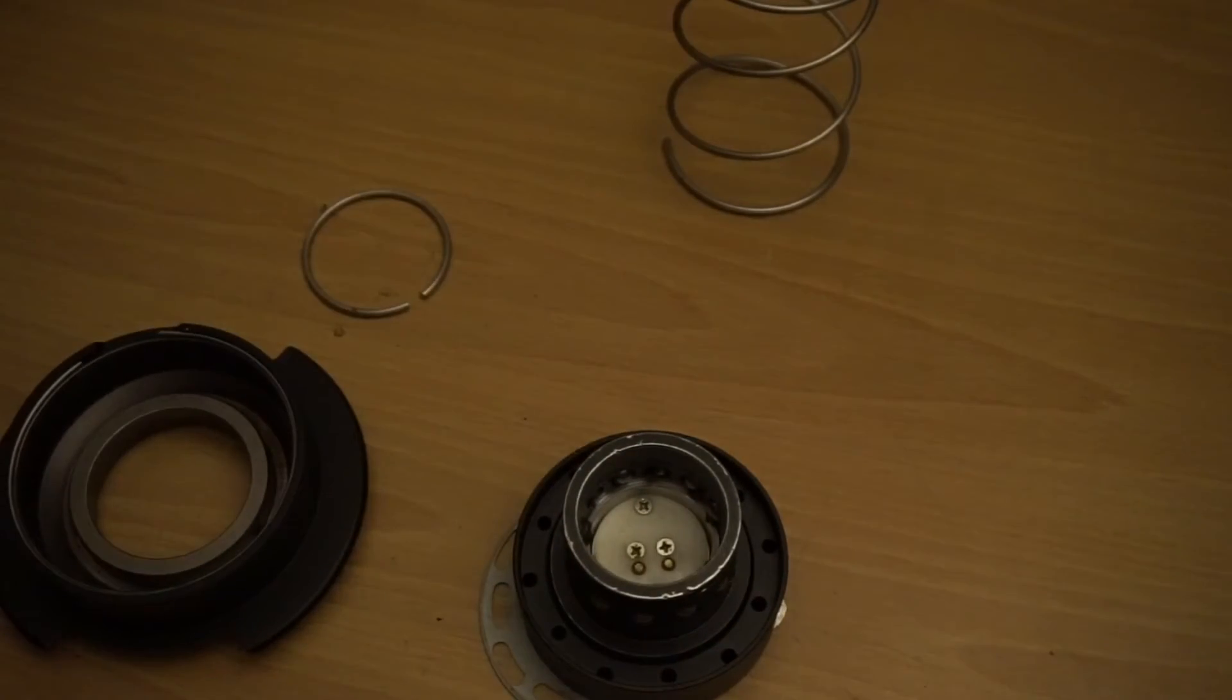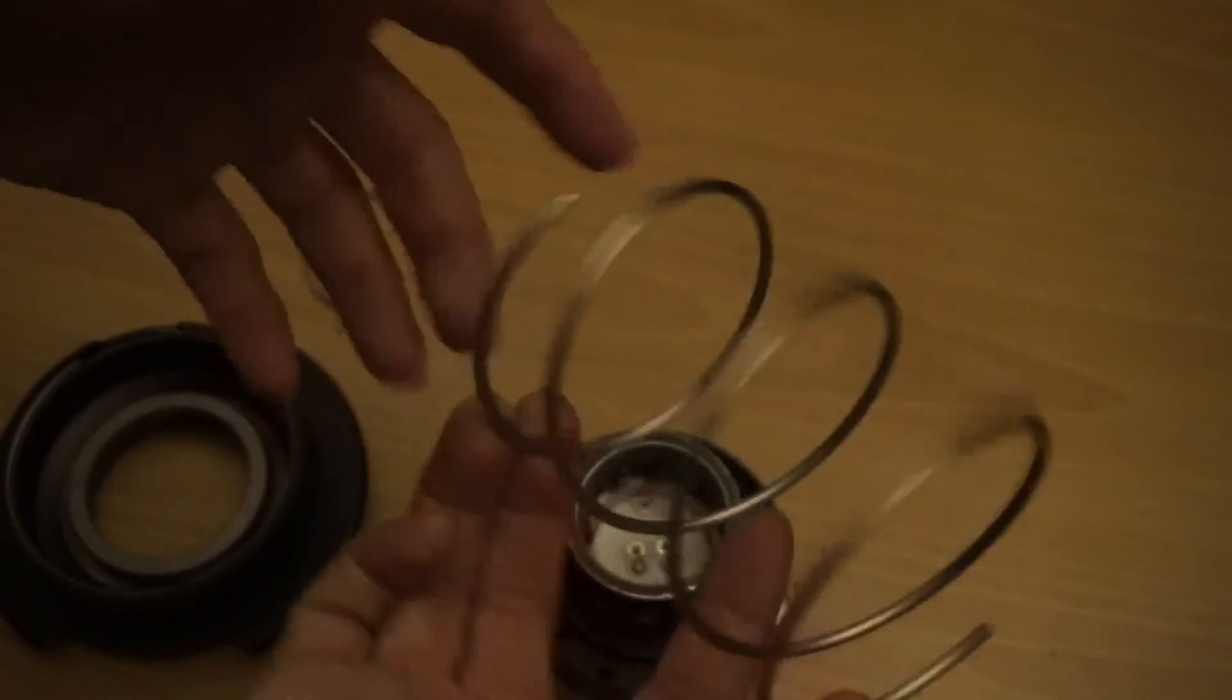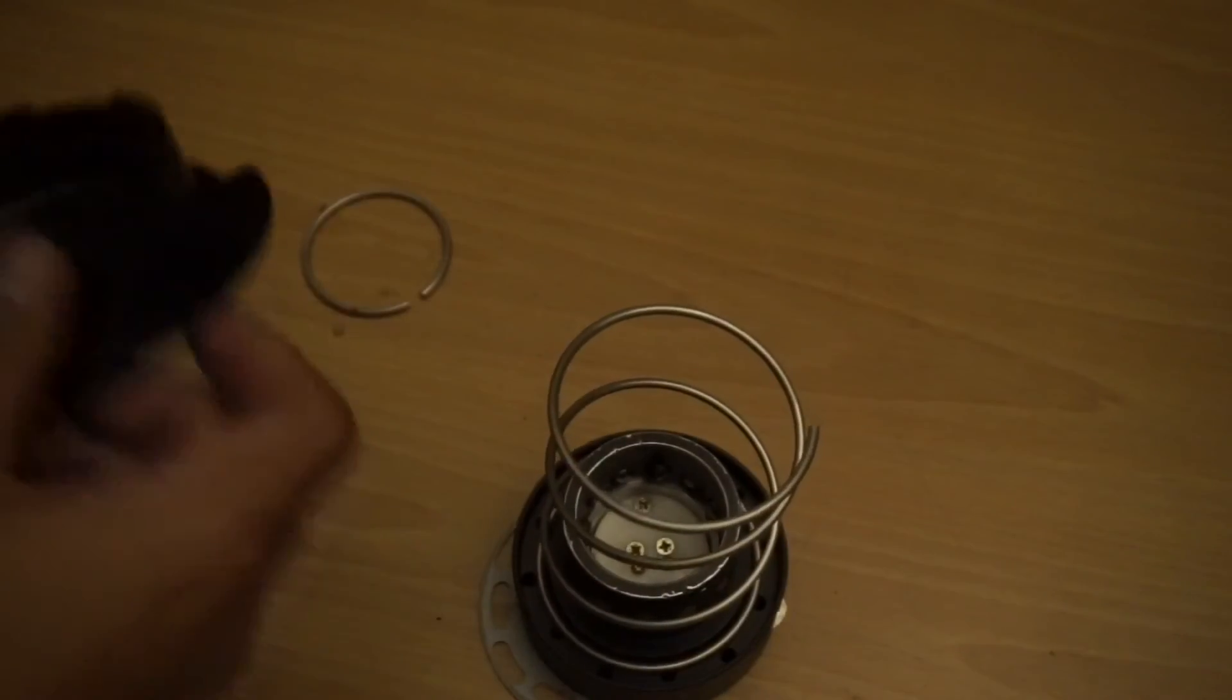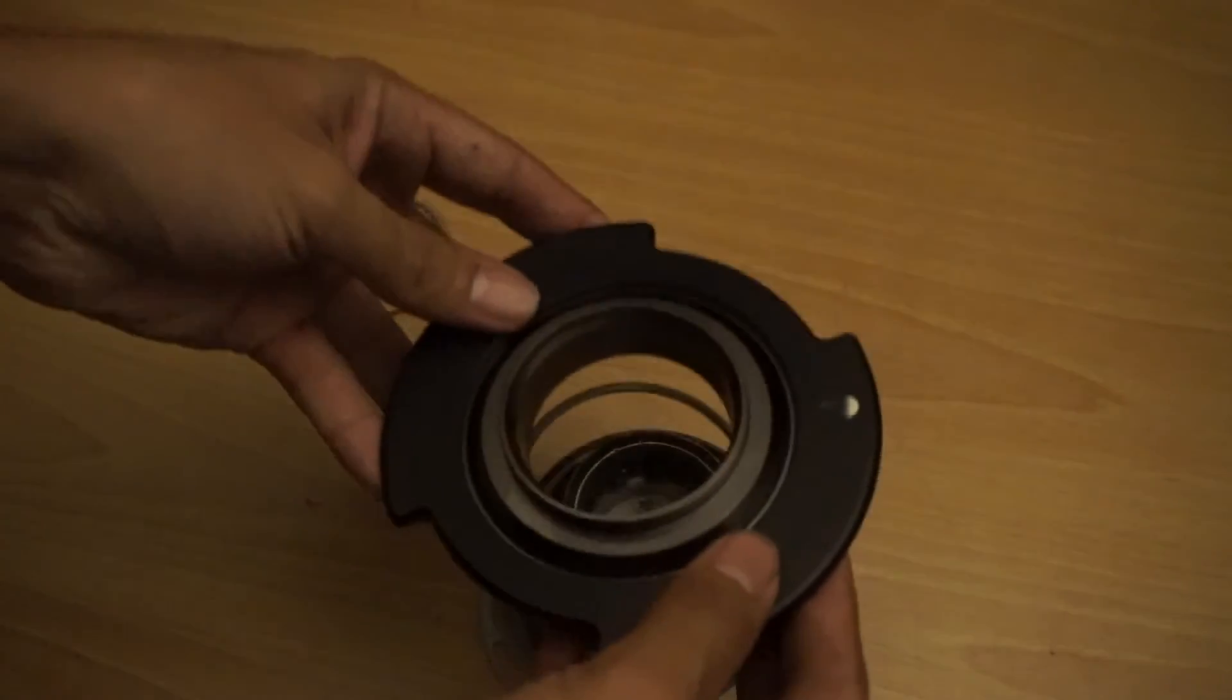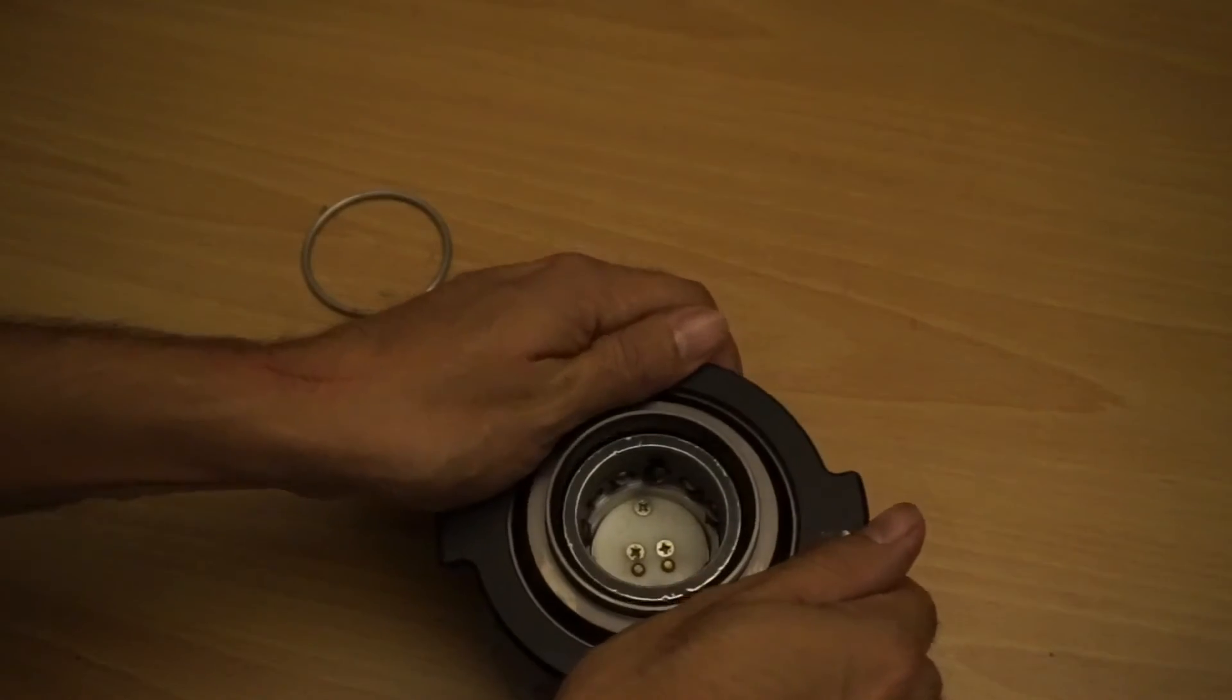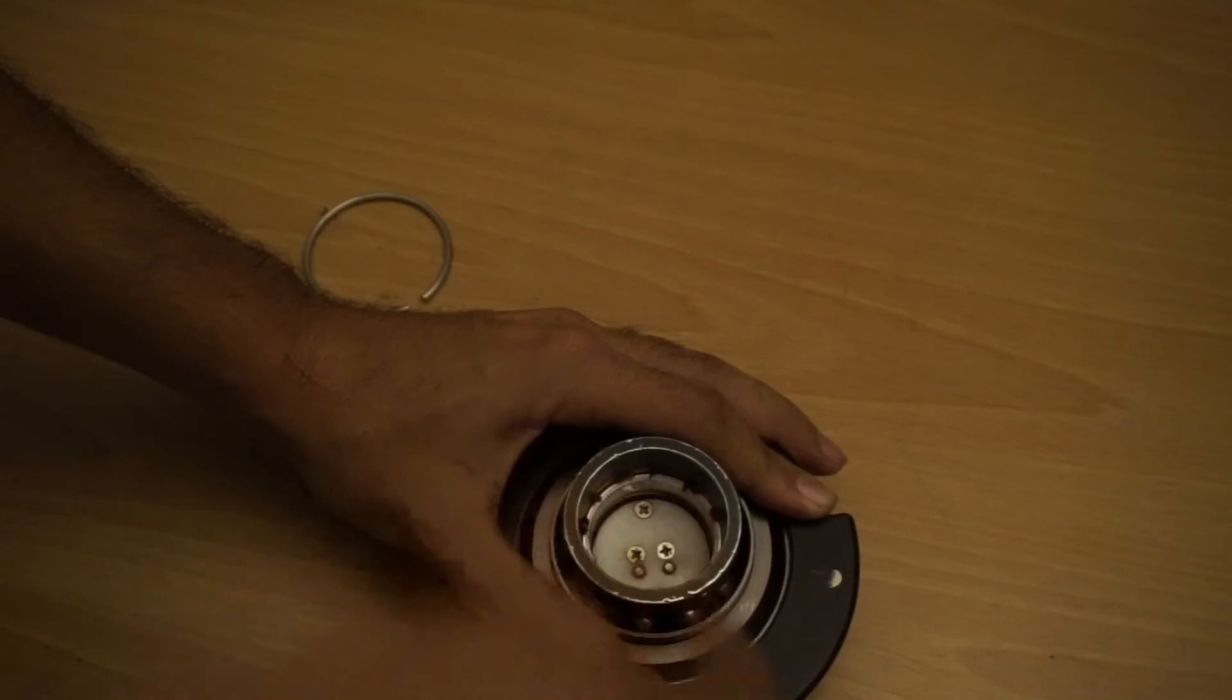All right, kind of a messy job so you always want to have a rag handy. Get your big spring, I already cleaned it pretty good with the alcohol, seat it down. Now this right here is gonna seat right into there, whichever way you want to do it. Put it over, press all the way, push the ring down, and then pull the ring back up.